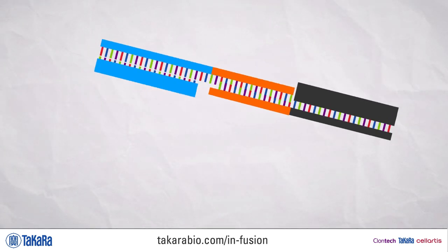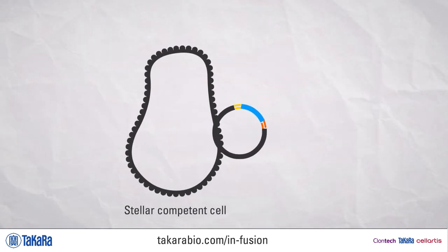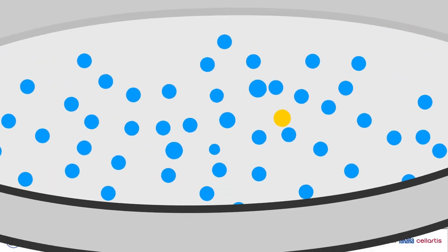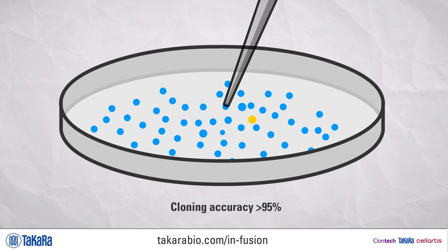Plate on selective media and check for colonies the next day. Your cloning accuracy will be above 95 percent.